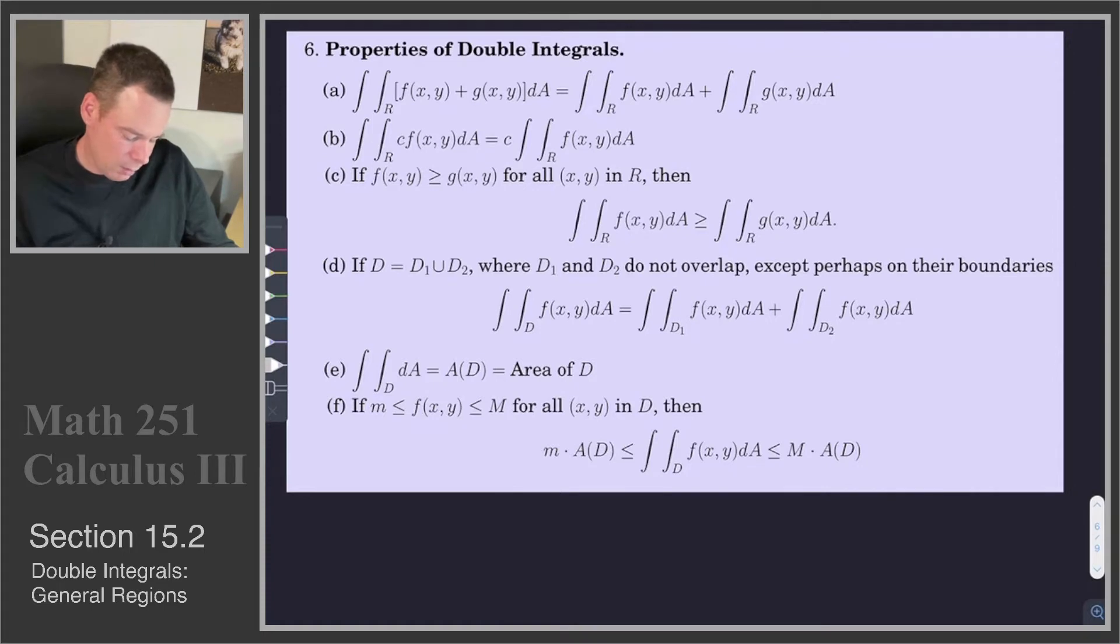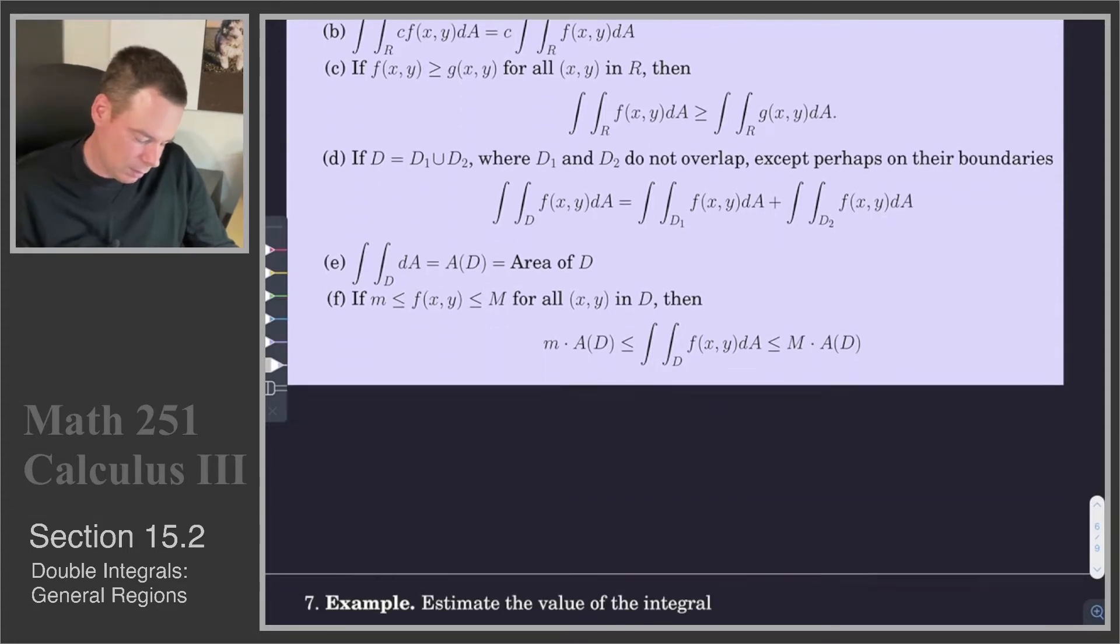And the last property says that if the function f is trapped between two constants, then the integral of f is trapped between the lower constant, the lower bound m times the area of the region, and it's bounded above by the upper bound on the function, capital M, times the area of the region. So that's the property that we're going to use in this next example.